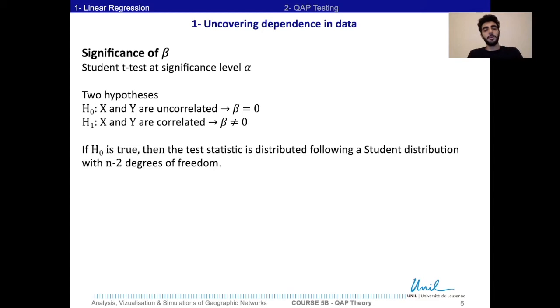Under the null hypothesis, the test statistic is distributed following a Student distribution with n-2 degrees of freedom. We reject H0 if the p-value is smaller than α.